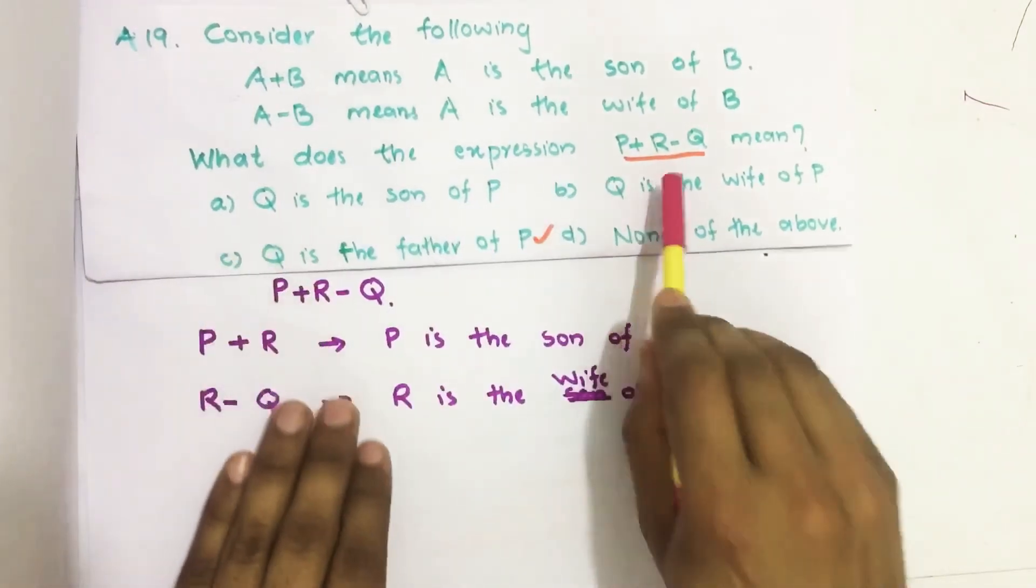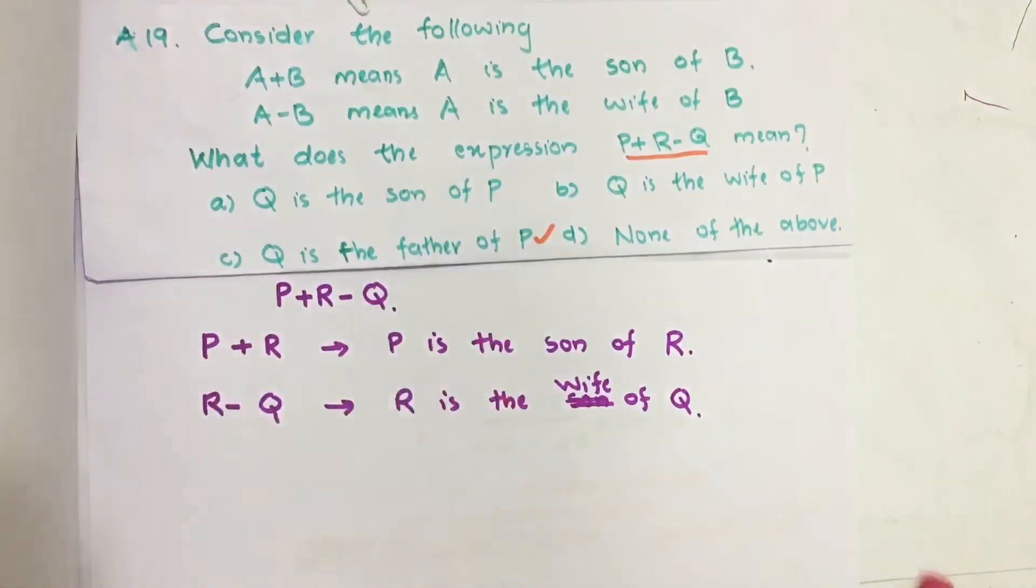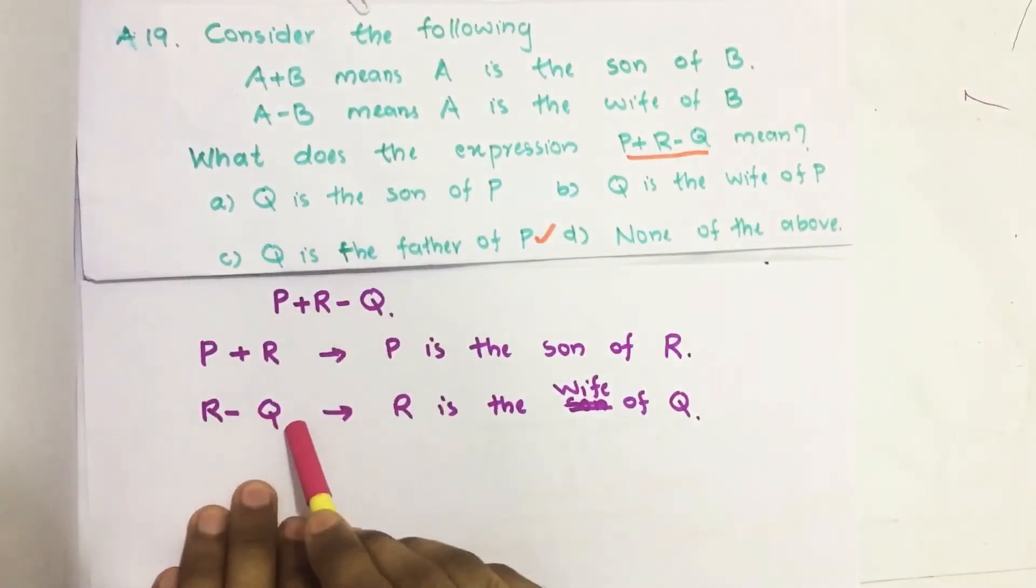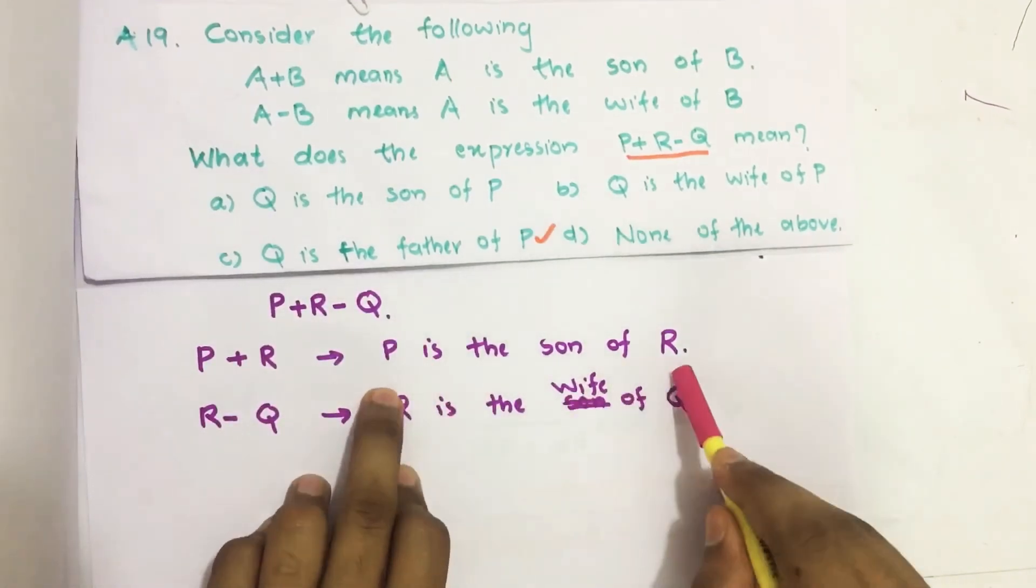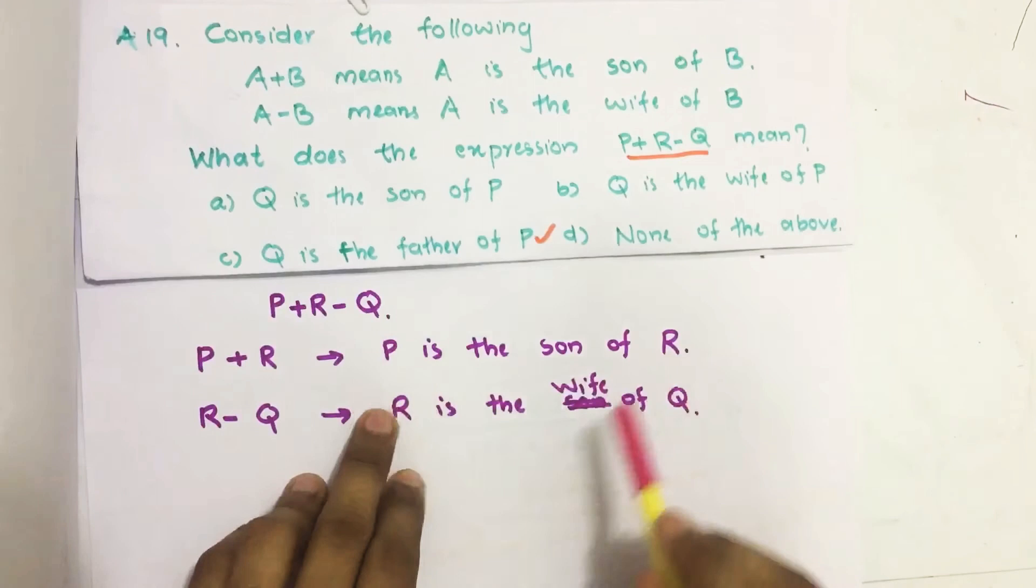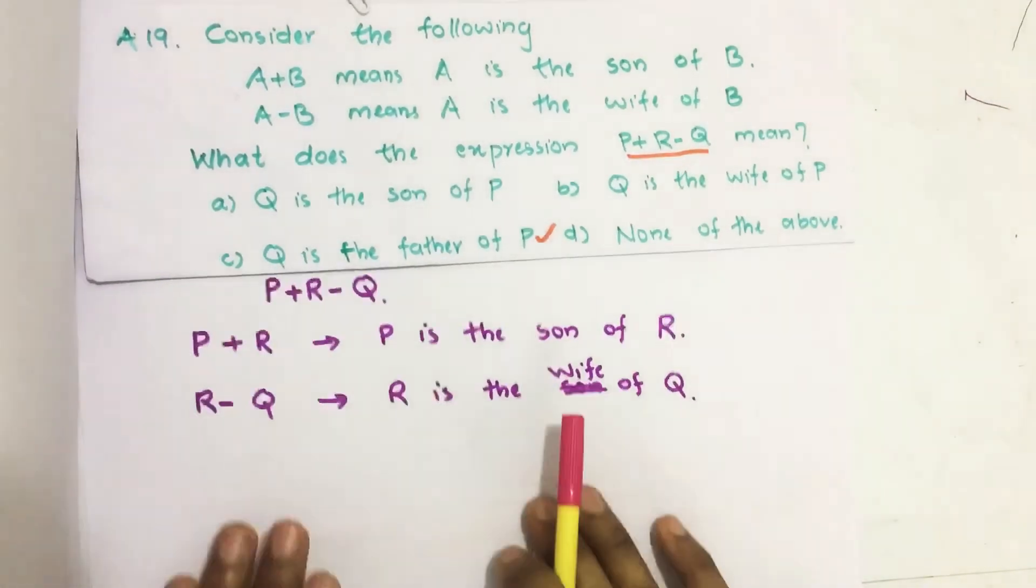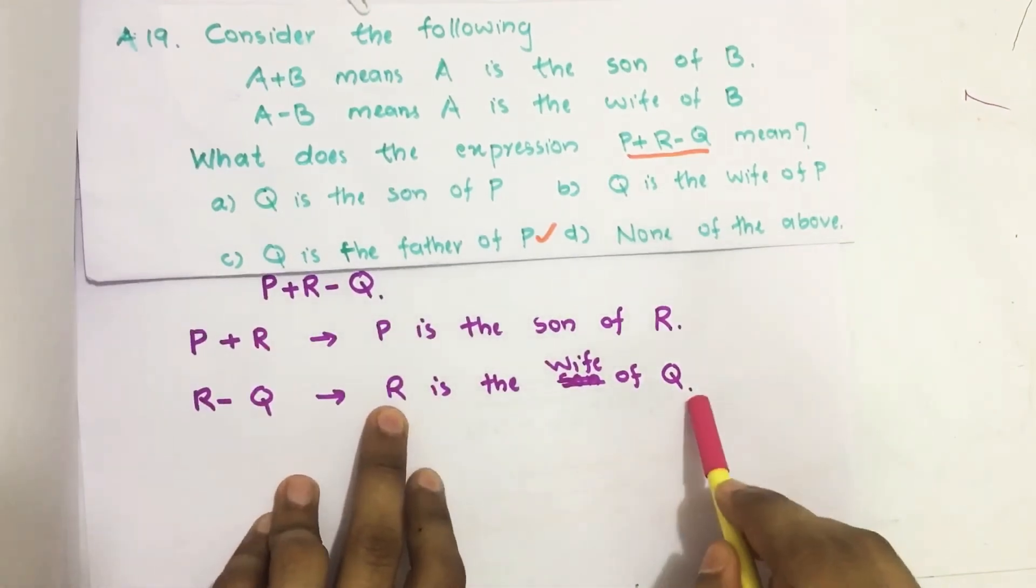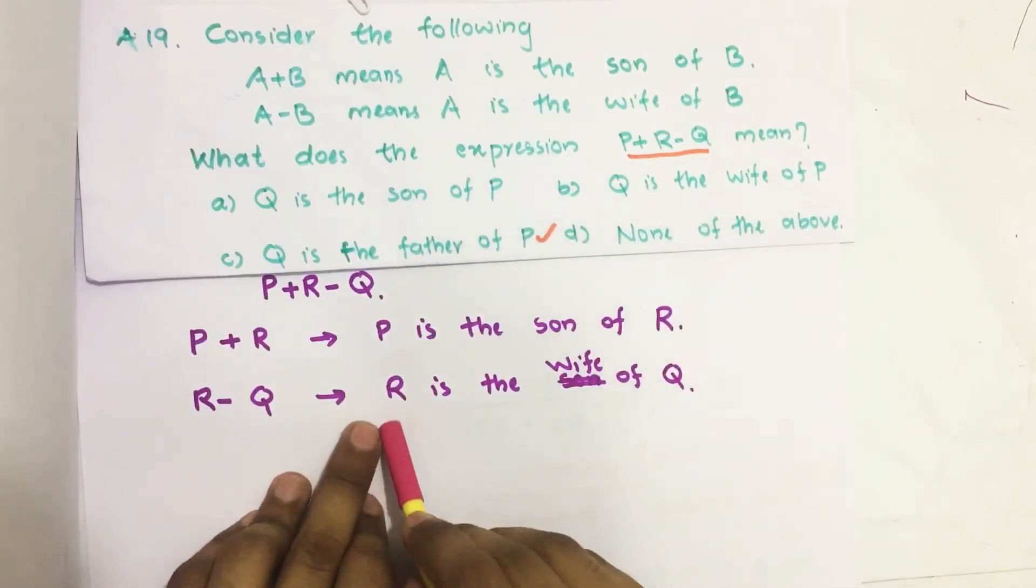Therefore, the given expression P+R-Q, I split into two: P+R and R-Q. P+R means P is the son of R, so R is the parent of P. Then R-Q means R is the wife of Q. Q is the husband and R is the wife.